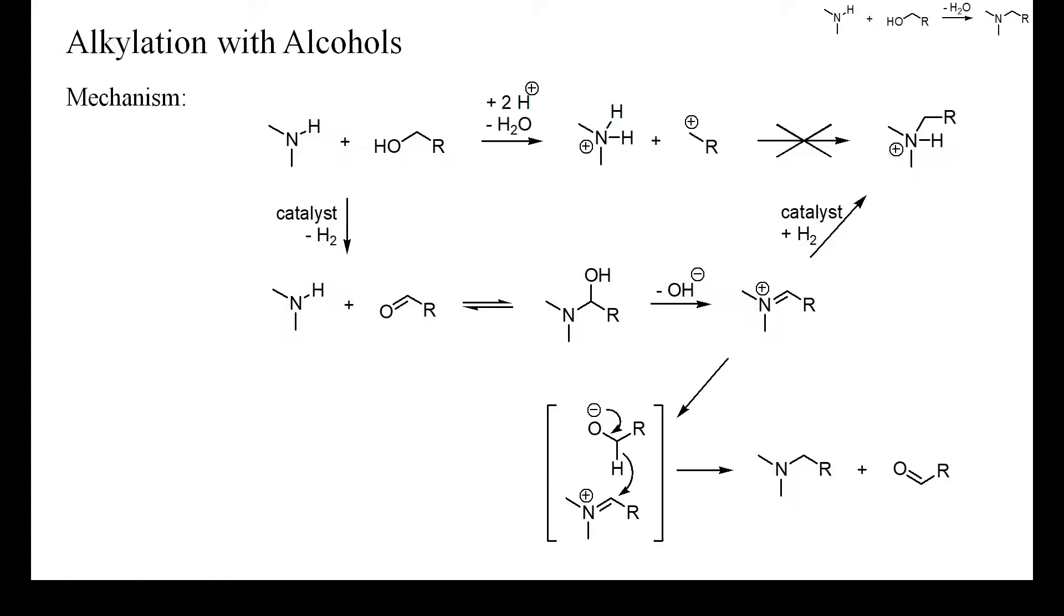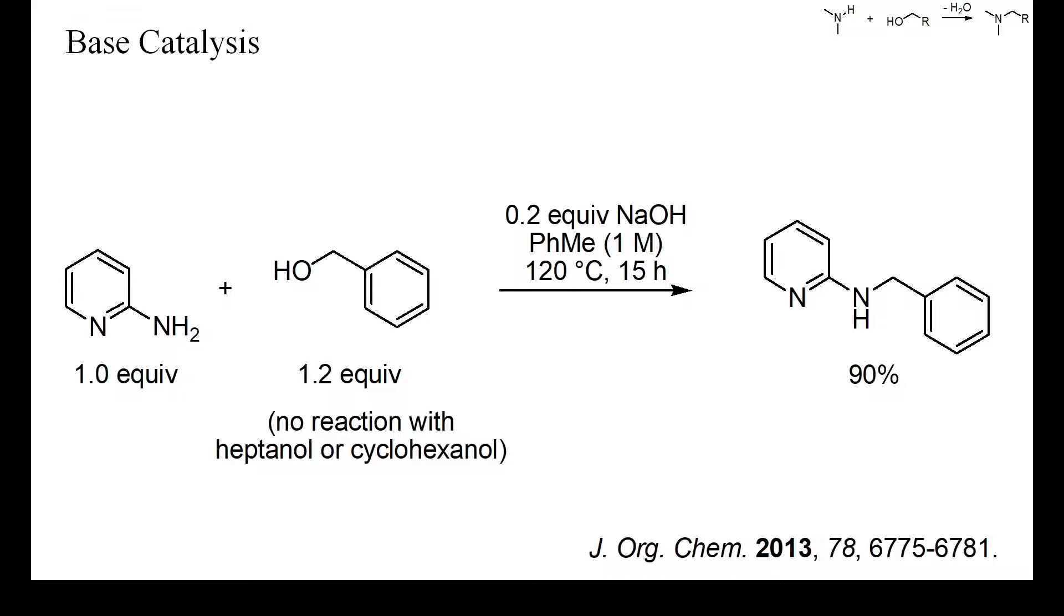Because iminium ions are mild oxidants and alcoholates are good hydride donors, the alkylation of amines by alcohols can sometimes also be catalyzed by strong bases or by small amounts of the dehydrogenated alcohol. This here is an example of such a base-catalyzed amine alkylation.